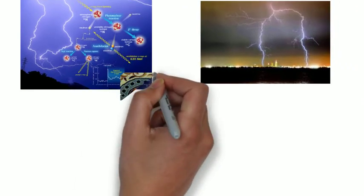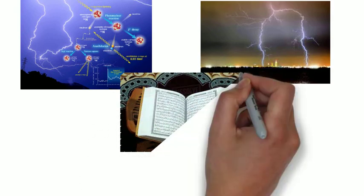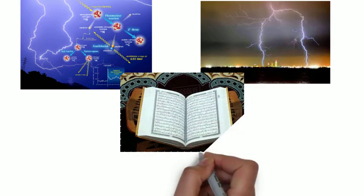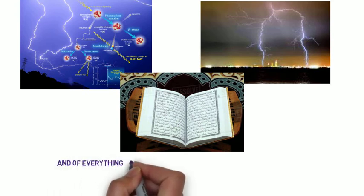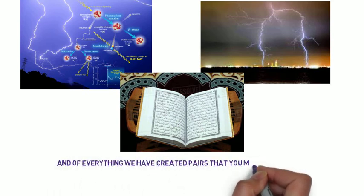More than 1,400 years ago, the Holy Quran mentioned that all matter is created in pairs, indicating the existence of antimatter. Chapter 51, Verse 49: And of everything we have created pairs that you may be mindful.